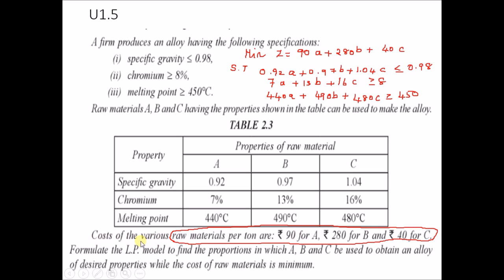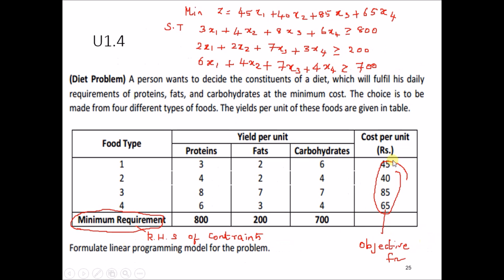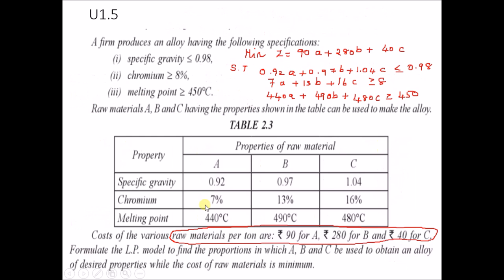Whenever you see the cost of various raw materials — similar to 'cost per unit' in the previous problem — that comes under the objective function. So, the objective function is 90A plus 280B plus 40C. After identifying this as the objective function, we can easily frame the constraints. The first constraint for specific gravity is: 0.92x1 plus 0.97x2 plus 1.04x3, which is less than or equal to 0.98. You can use A, B, C or x1, x2, x3 as variables.